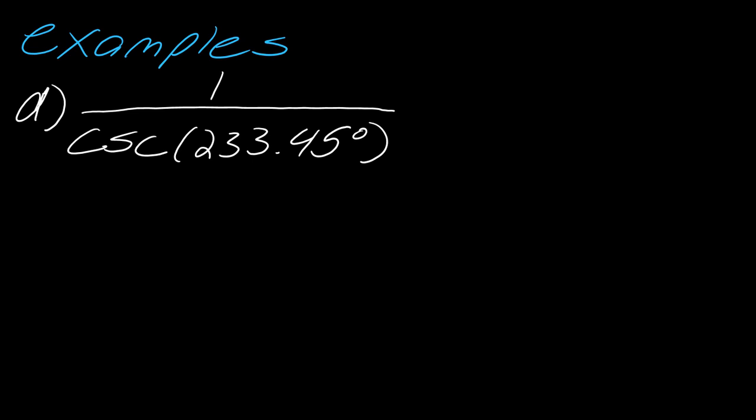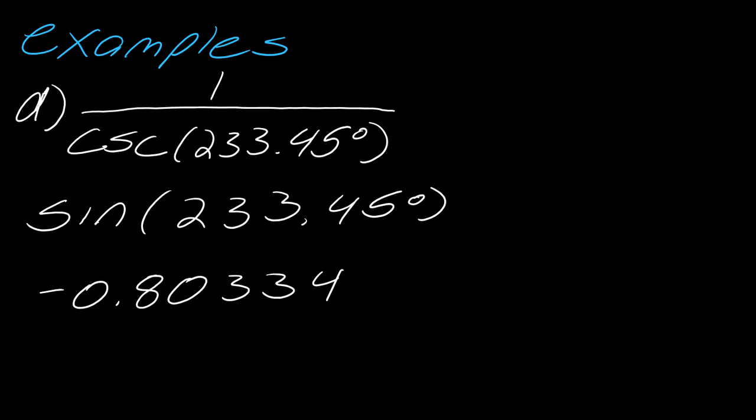And then for 1 over cosecant of 233.45 degrees. Alright, so you should probably have a guess as to what to do with this. So, cosecant is the reciprocal of sine. So, I can just rewrite this as sine of 233.45 degrees. And then, bada bing, bada boom. Negative 0.80334.